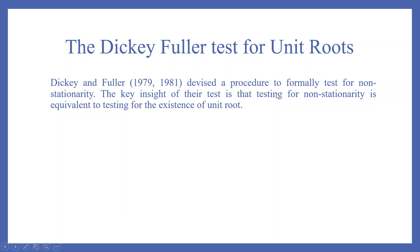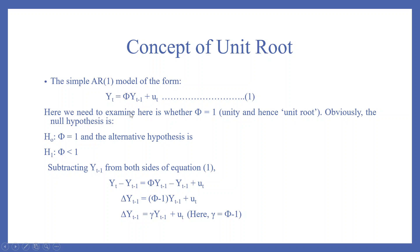Dickey and Fuller devised a procedure to formally test for non-stationarity. The key insight of the test is that testing for non-stationarity is equivalent to testing for the existence of a unit root. In the simple AR(1) model Yt equals phi times Yt minus 1 plus Ut, we need to examine whether phi equals 1 or not. The null hypothesis is phi equals 1, and the alternative hypothesis H1 is phi less than 1, since phi greater than 1 can never exist.